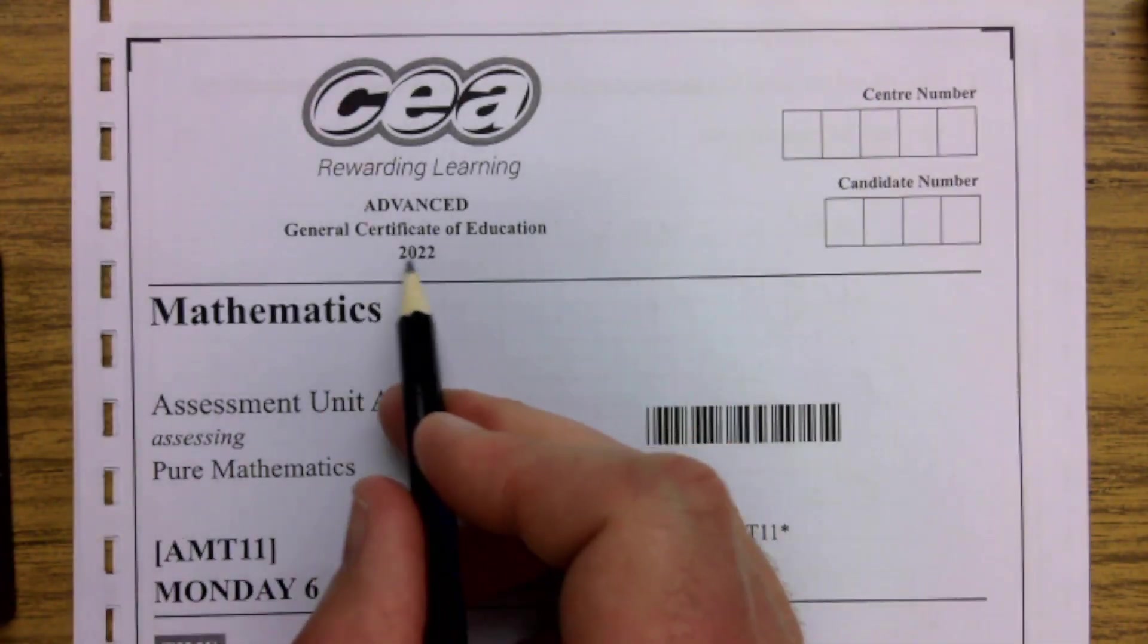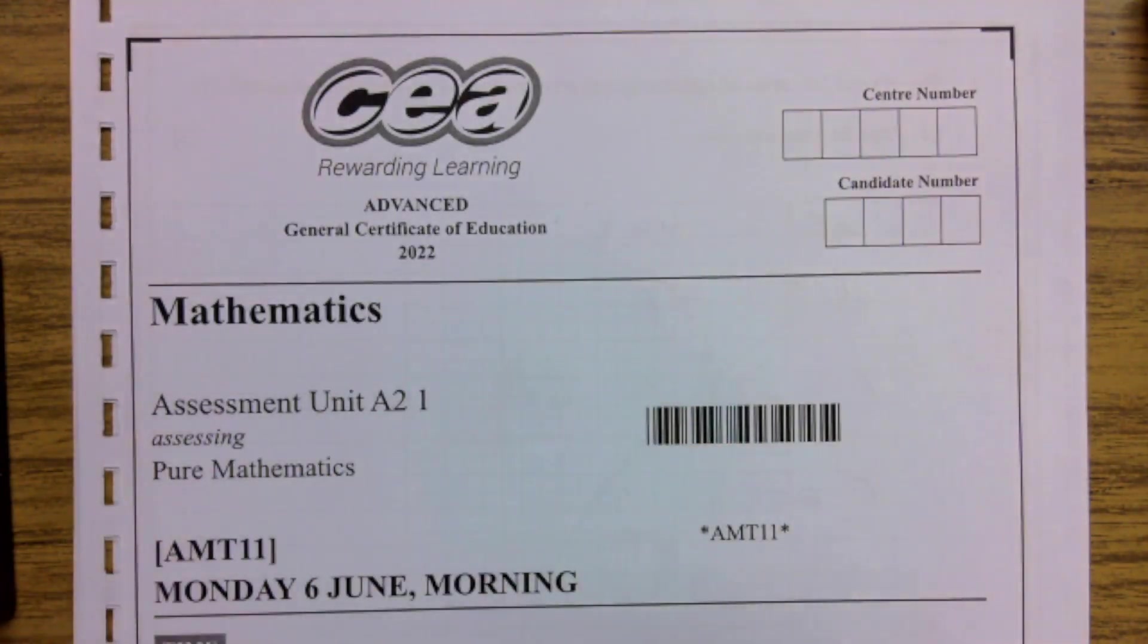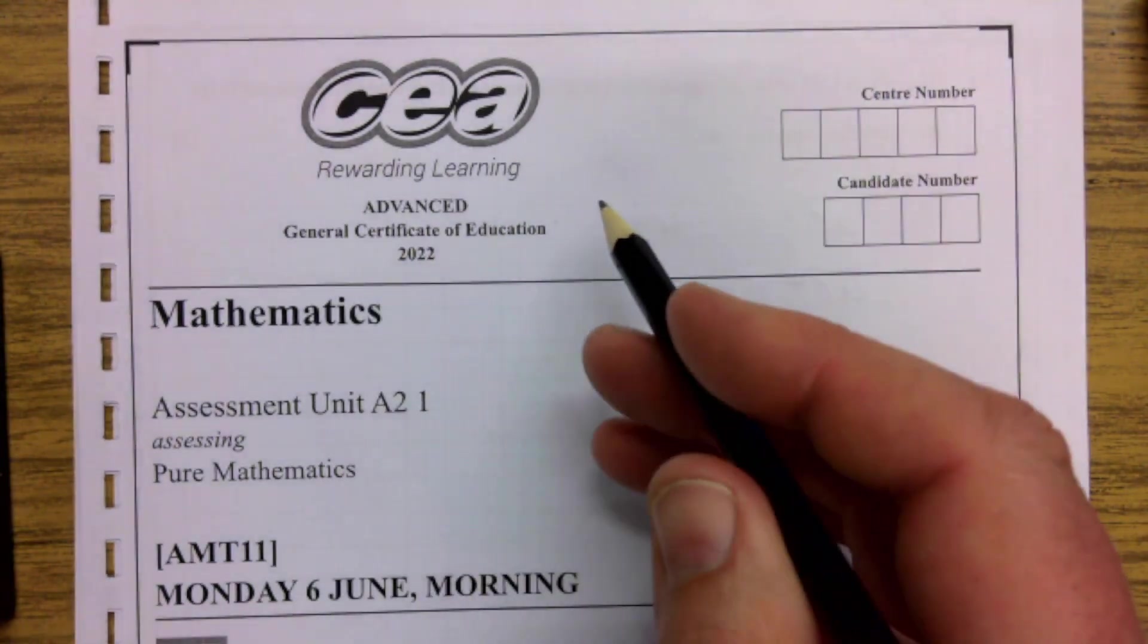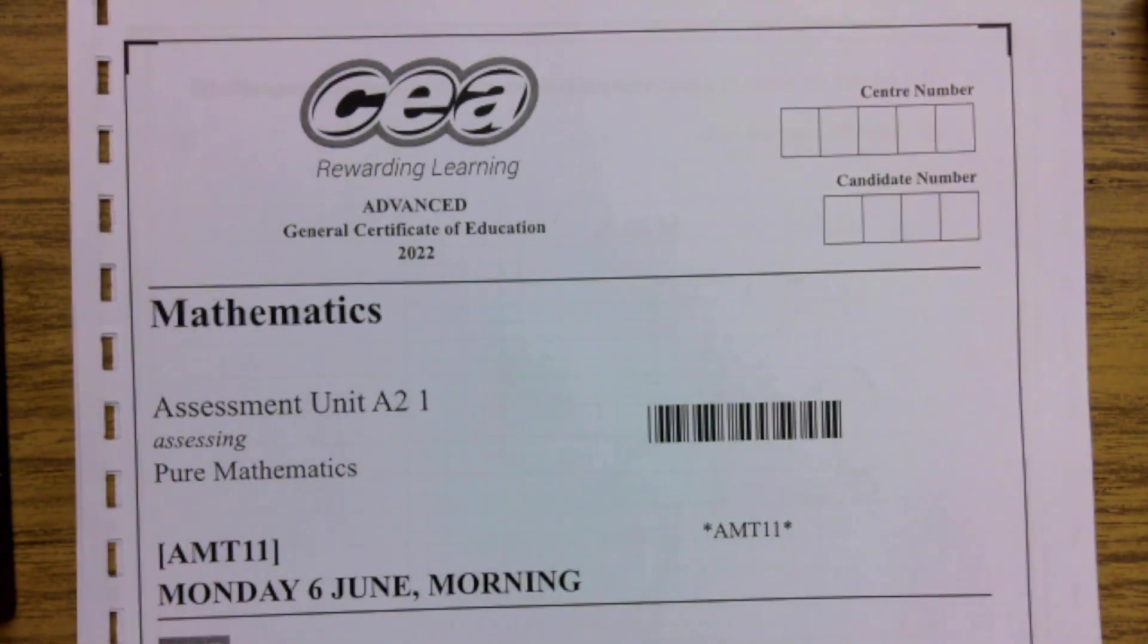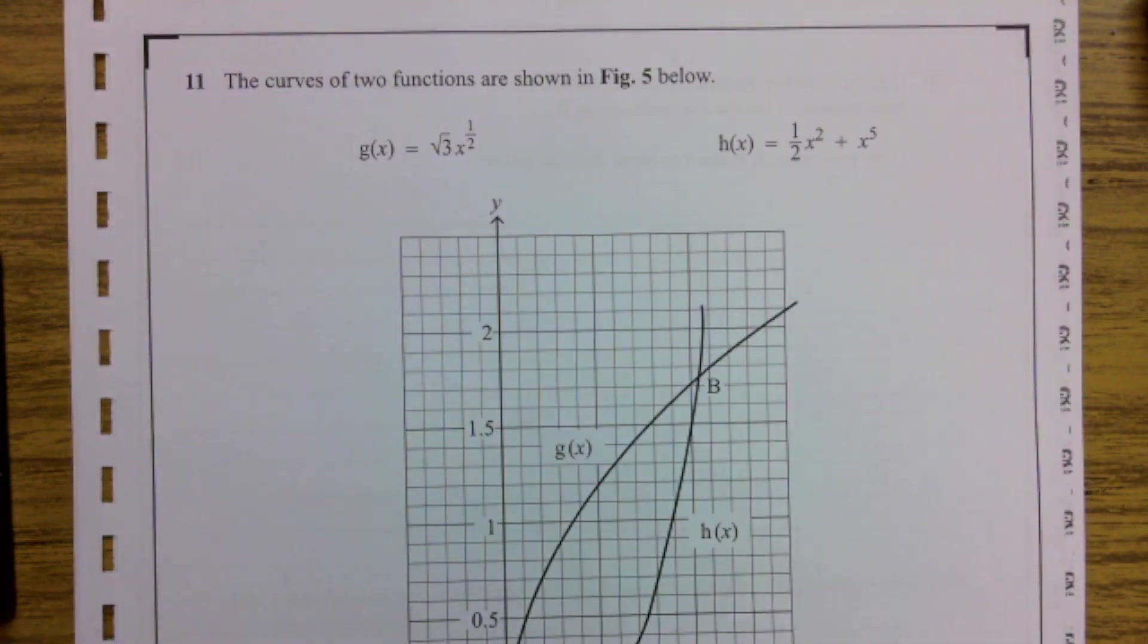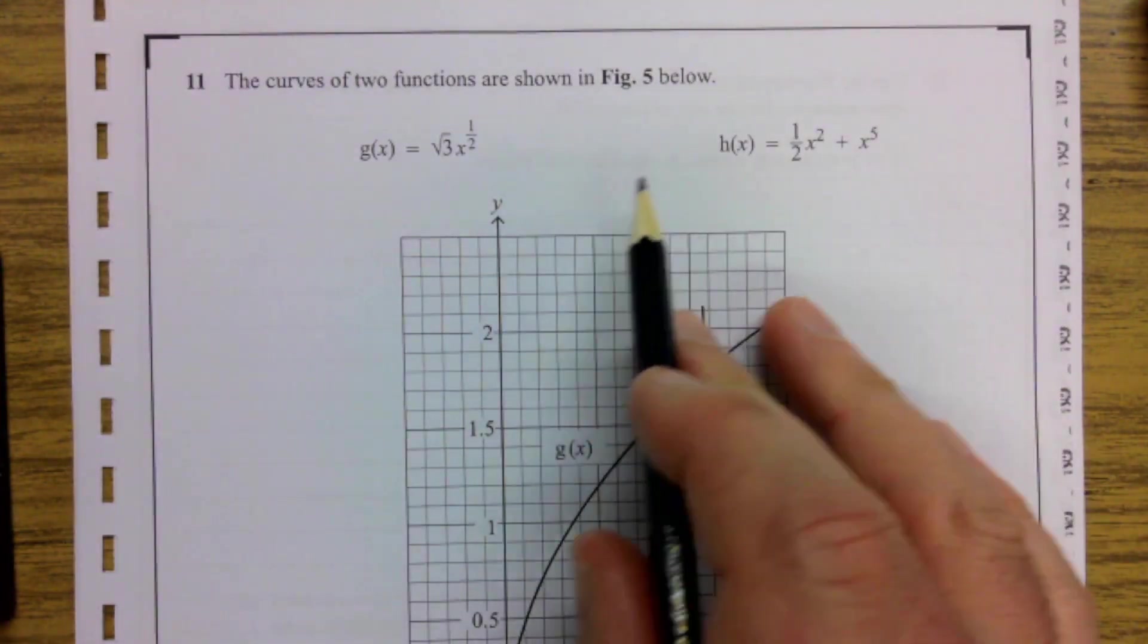This is question 11 in the 2022 A2 Pure Maths exam from CCEA from Monday 6th of June. So let's take a look at what we're being asked. The curves of two functions are shown in figure 5 below.